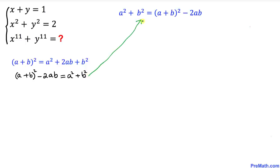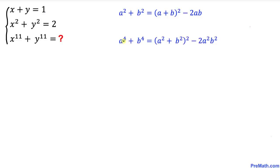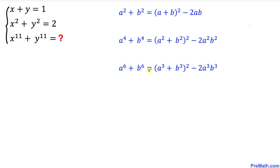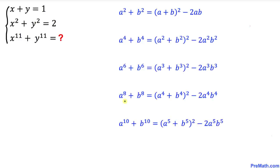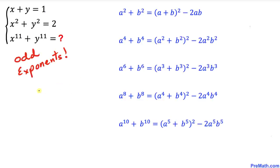Using the same analogy, we can write a⁴ plus b⁴ as (a²+b²)² minus 2a²b², and a⁶ plus b⁶ as (a³+b³)² minus 2a³b³. Similarly, a⁸ plus b⁸ and a¹⁰ plus b¹⁰ follow the same pattern. Keep in mind that we are dealing with even exponents in all these patterns. In the next step we will deal with odd exponents.